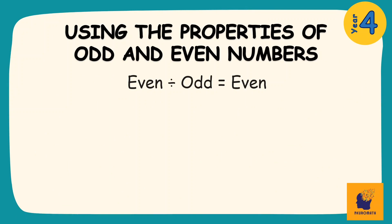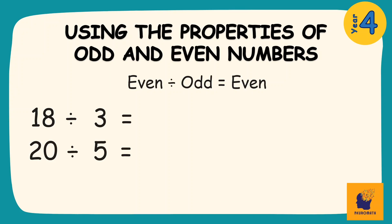Now that we know that, let's get into our focus. The first thing we need to understand about the properties of odd and even numbers when it comes to division is that when I divide an even number by an odd number, I get an even number as an answer. So I could have problems such as 18 divided by 3 or 20 divided by 5. Because I'm dividing an even number by an odd number, my answer will be an even number. We can check this: 18, an even number divided by 3, an odd, gives us an answer of 6, an even number.